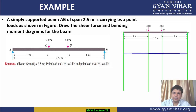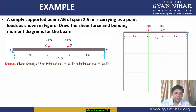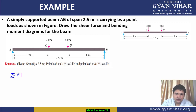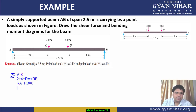We will find the support reactions at A and B using the conditions of equilibrium. By the first condition, summation of all vertical forces equals zero: 2 + 4 = Ra + Rb, so Ra + Rb = 6 kN. This is our first equation.